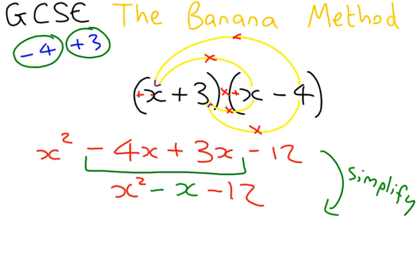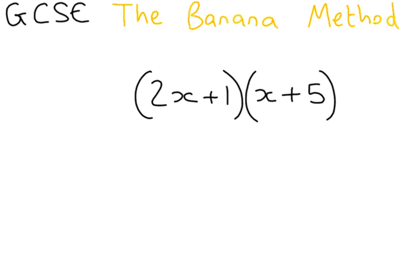Hopefully you've caught up with me so far, and you understand what the banana method does. So we can try a more difficult one. This is more difficult, because our first term in the first bracket is 2x, as opposed to x.